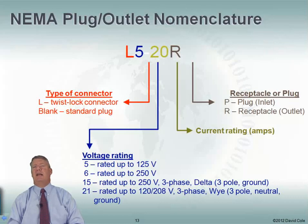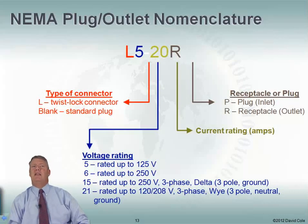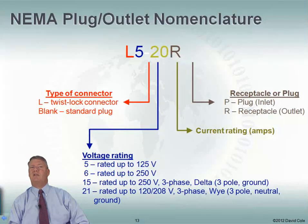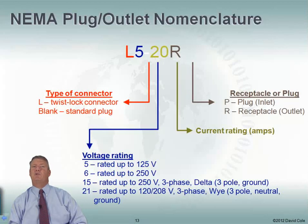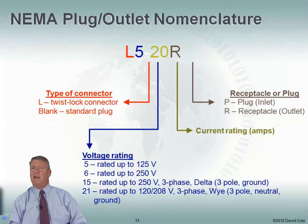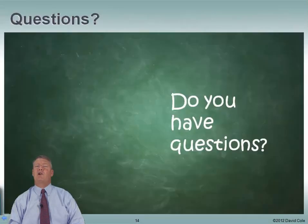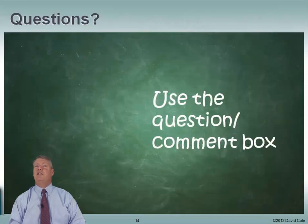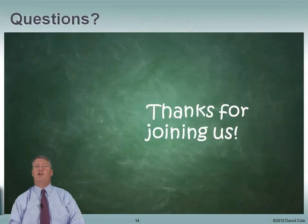The NEMA plug and outlet nomenclature — this is really more for reference. When buying plugs or outlets, this is how NEMA defines them. The first character is the connector type: L means it's a twist-lock connector, a blank means it's a standard plug. The 5 is the voltage rating — in this case, rated up to 125 volts. The 20 is the current rating, supporting 20 amps. Finally, R means it's a receptacle (an outlet), and P means it's a plug. So we've talked about circuit breakers and the NEMA nomenclature. If you have any questions, please use the question and comment box. Thank you very much for joining us — I look forward to having you at the next module.